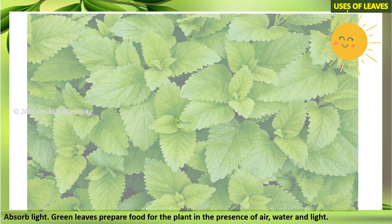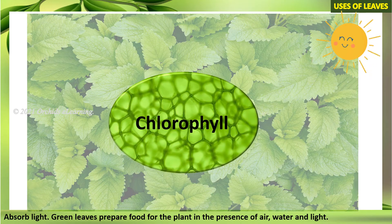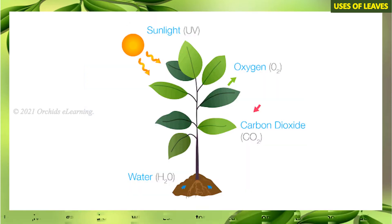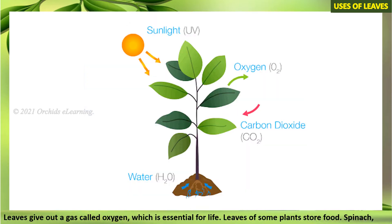Most leaves appear green because they contain a substance called chlorophyll. Chlorophyll helps leaves to absorb light. Green leaves prepare food for the plant in the presence of air, water, and light. Leaves give out a gas called oxygen, which is essential for life.